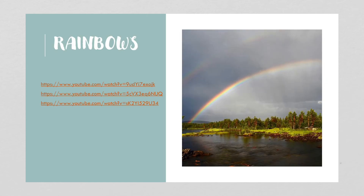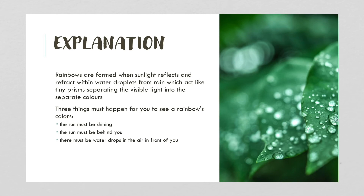And then rainbows. Rainbows are formed when sunlight reflects and refracts within water droplets from rain, which act like tiny prisms, separating visible light into separate colors. There are three things that have to happen for you to see a rainbow. The sun has to be shining — there has to have been moisture in the air, but now the sun has come out from behind a cloud. The sun has to be behind you, and there has to be water in the air in front of you. So if you're looking for a rainbow after a rainstorm, don't look towards the direction of the sun — put your back to the sun and look in the opposite direction.